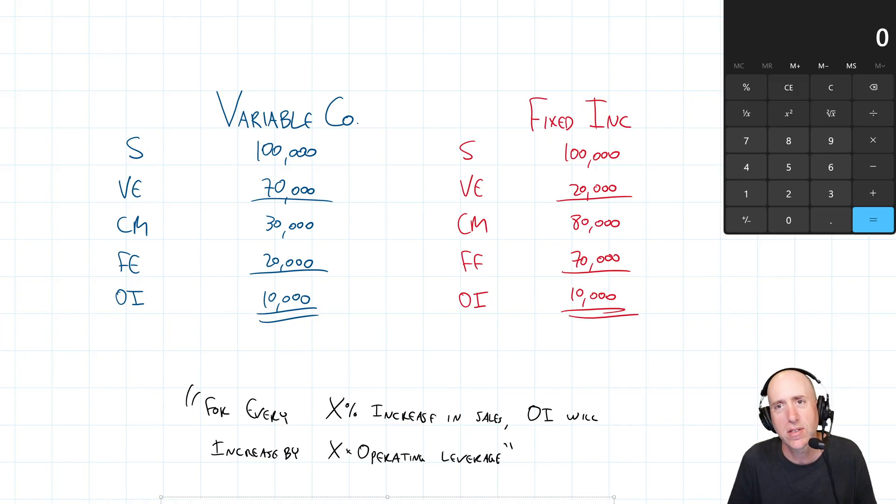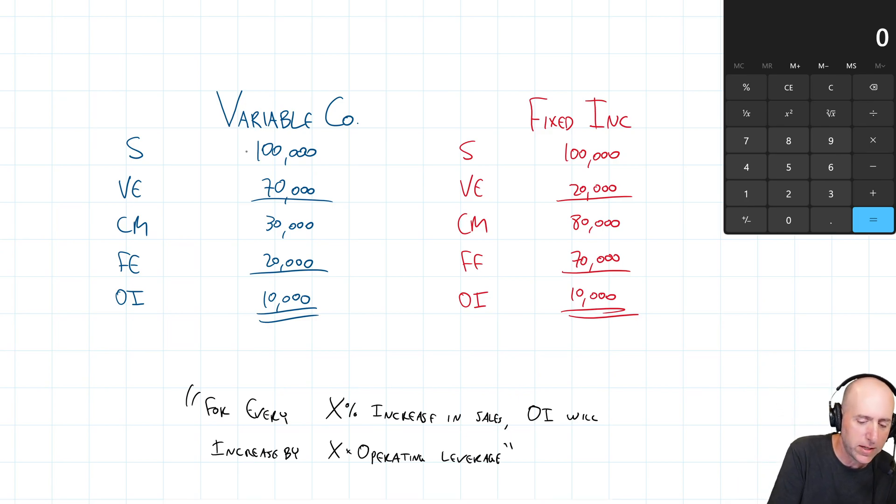So we have two companies. Let's assume they're in the same industry. Let's assume they're competitors. And on the face of it, they look pretty similar. They sell the exact same amount. They both have the exact same amount of operating profit, very similar companies, except variable company has most of its expenses are variable and fixed company, most of its expenses are fixed. That's the big difference between the two companies.